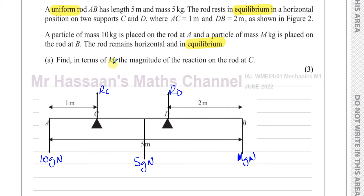We need to find in terms of M the magnitude of the reaction on the rod at C. The rod is in equilibrium, which means the upward and downward forces are balanced, and also the moments acting clockwise and anticlockwise about any point we choose - whether on the rod or off it - will be balanced. The clockwise moments about any point will equal the anticlockwise moments, because it's in equilibrium.